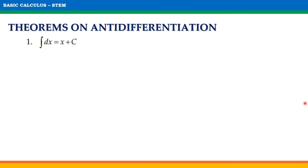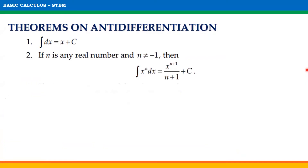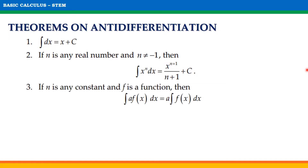For the first theorem, the indefinite integral of dx is equal to x plus c, where c is an arbitrary constant. For the second theorem, if n is any real number and is not equal to negative 1, then the indefinite integral of x raised to n with respect to x is equal to x raised to n plus 1 divided by n plus 1 plus the arbitrary constant c.